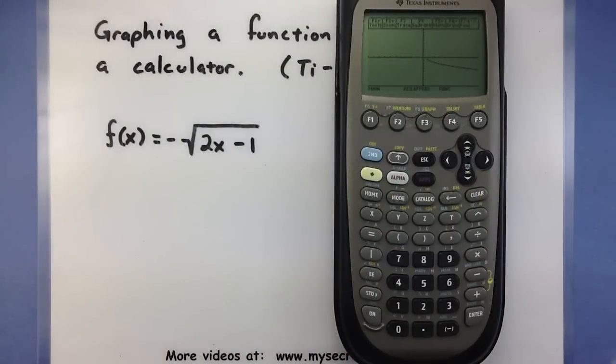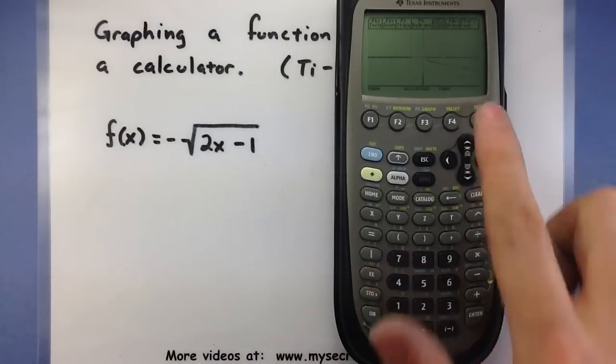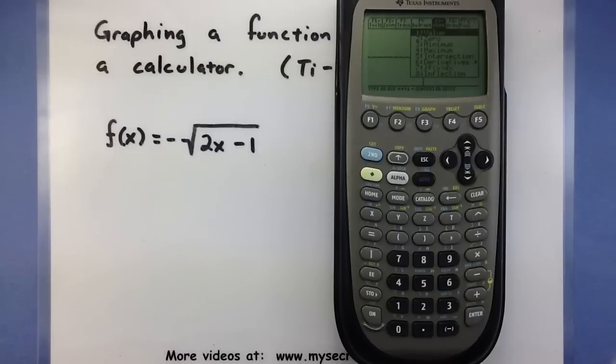Another way that you can double check some of the values into the calculator is to use the value feature. To use that, press F5 to see your math menu. The first option on there says value, so press enter.